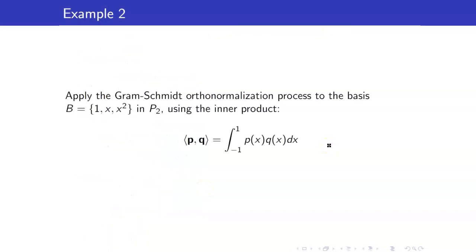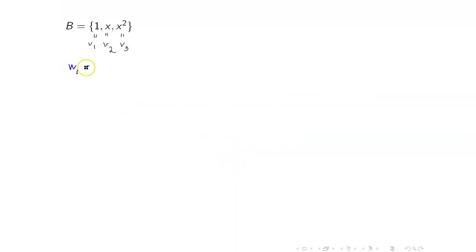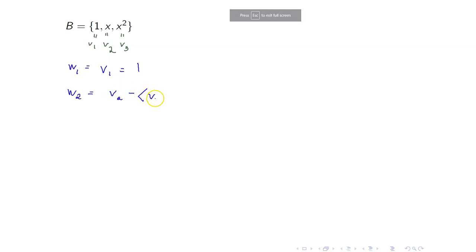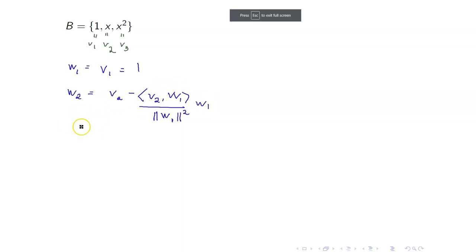Here's another example. Let us apply the Gram-Schmidt orthonormalization process to this basis. Remember that the Gram-Schmidt process will always depend on the inner product defined on your vector space. In this case, the inner product of two polynomials P and Q is defined as the integral of P(x) times Q(x) from negative 1 to 1. Let's proceed. W1 is just equal to V1, so that's 1. W2 equals V2 minus the inner product of V2 with W1 over the norm of W1 squared, times W1. Let us compute the inner product of V2 and W1.